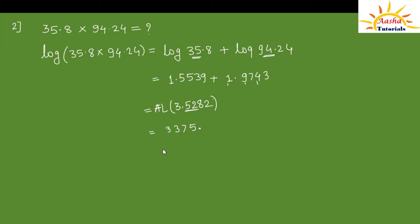Alternatively, instead of adding 1 to the characteristic, we can mark the decimal point after 1 digit and write the characteristic value as a power of 10. We can write 3.375 × 10³. Both approaches give the same answer.